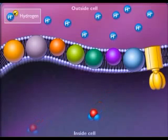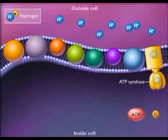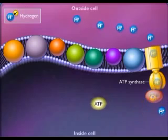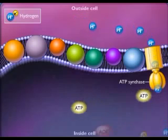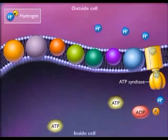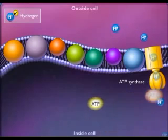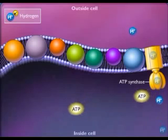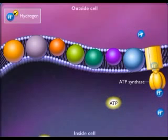The enzyme ATP synthase utilizes the energy of the proton motive force to synthesize ATP. This enzyme allows protons to pass back into the cell and couples the energy released in this process to the phosphorylation of ADP to form ATP.